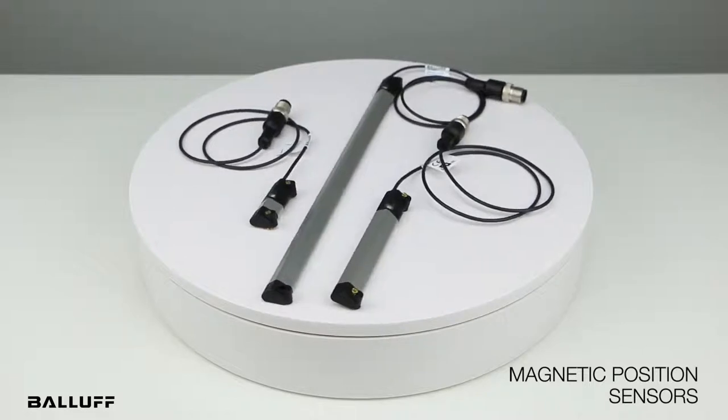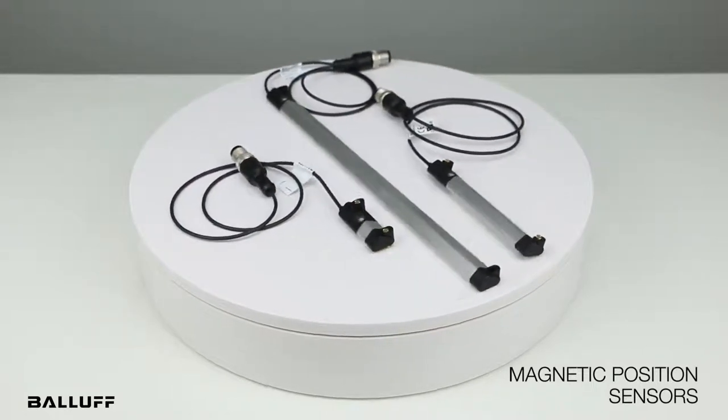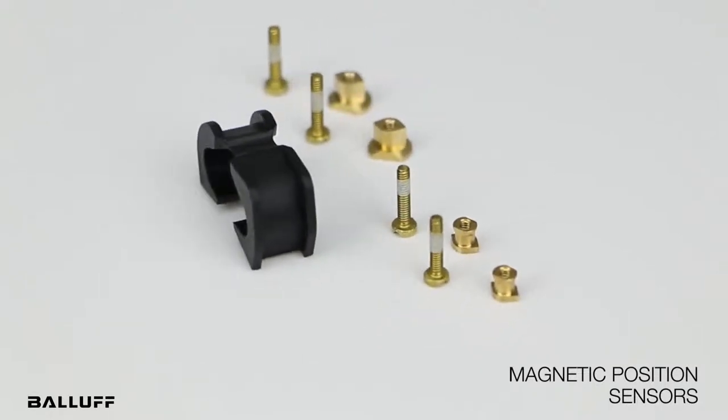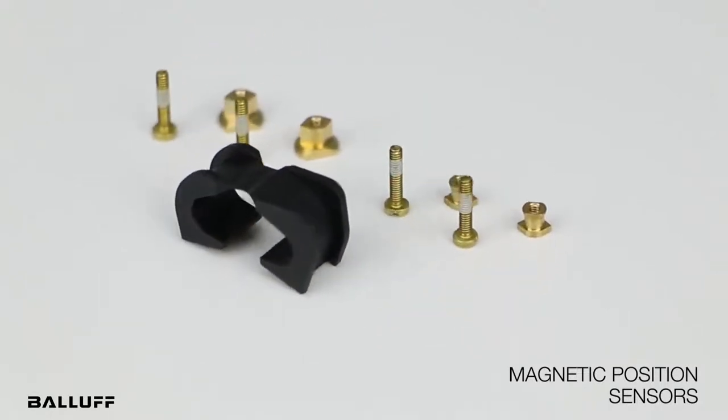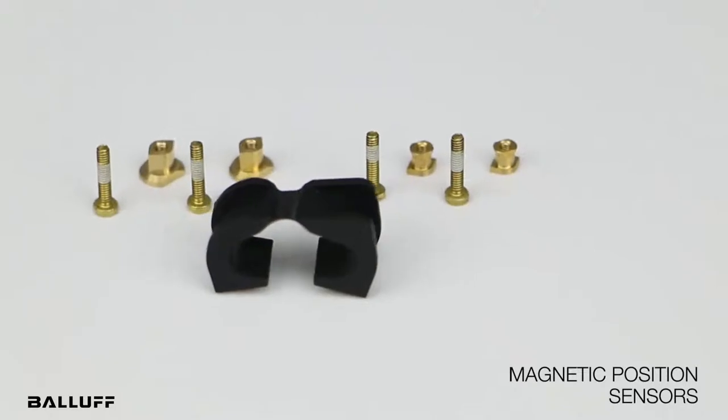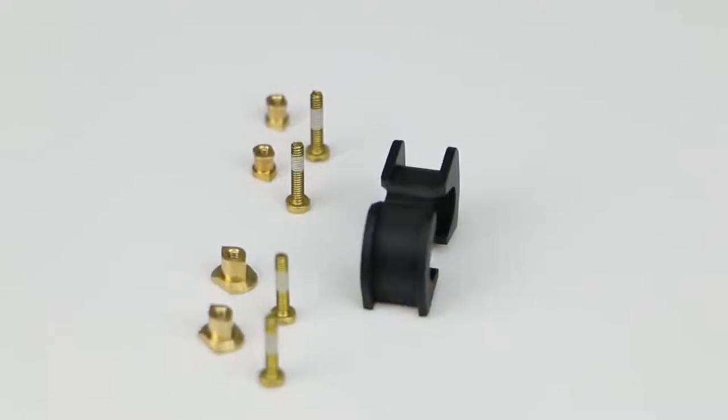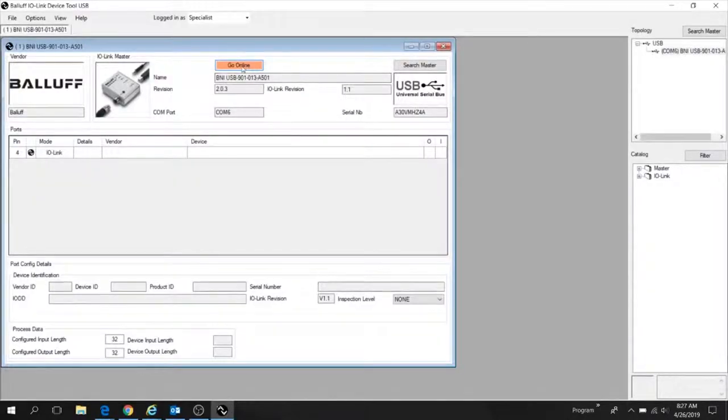And the most exciting part is that one has both an analog and IO-Link interface. Thanks to a universal housing and the adapters, which are sold separately, these can be easily integrated and mounted onto a wide range of cylinders, including C-slot, T-slot, round, or tie rod.